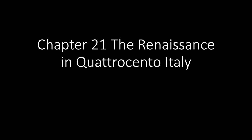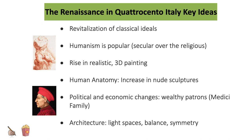Hey everyone, it's Mr. Lane here to bring you a lecture over Chapter 21, the Renaissance in Quattrocento Italy, referring to 15th century Italian art, also known as the Florentine Renaissance. Key ideas include the revitalization of classical ideals from Greco-Roman antiquity — coins, gems, sculpture, buildings, and Greek and Latin literature — humanism, secular over religious prominence, a rise in realistic 3D painting, human anatomy, increased nude sculptures, political and economic changes with wealthy patrons like the Medici family. In architecture, there are lighter spaces, balance, and symmetry.